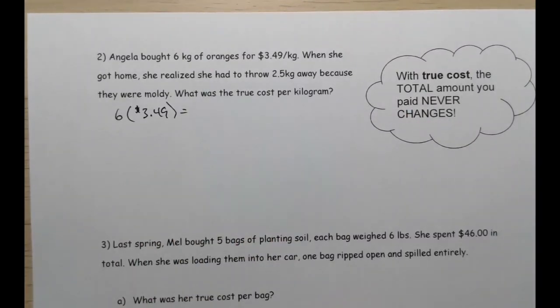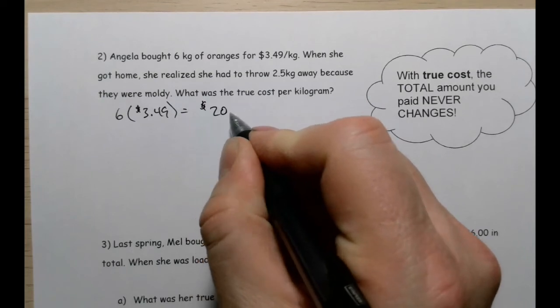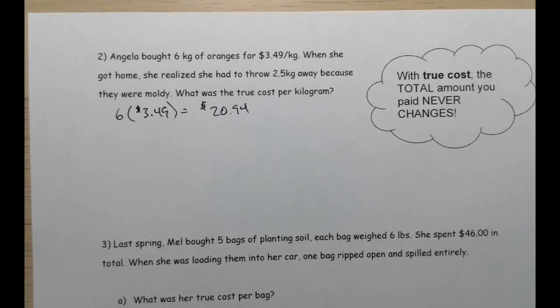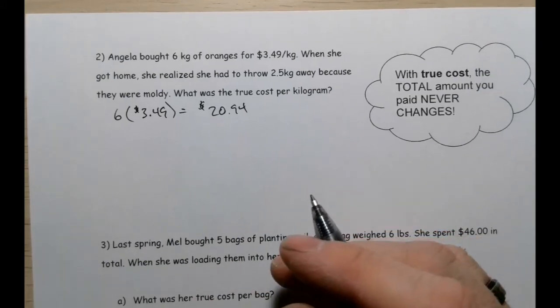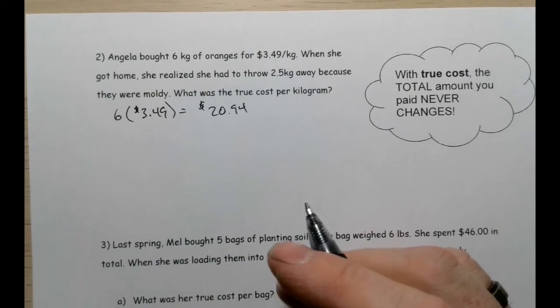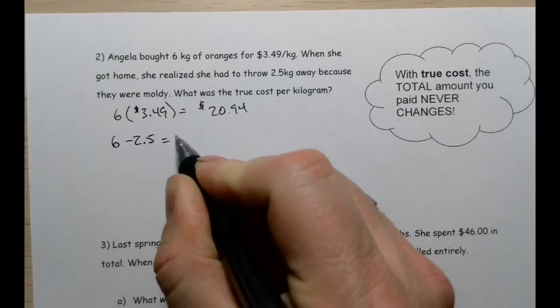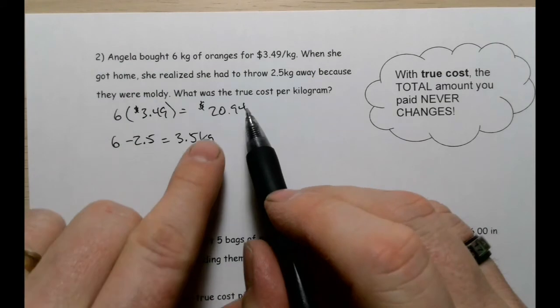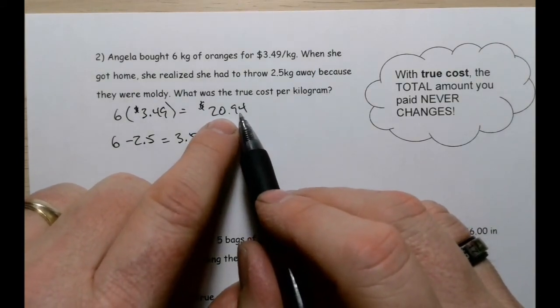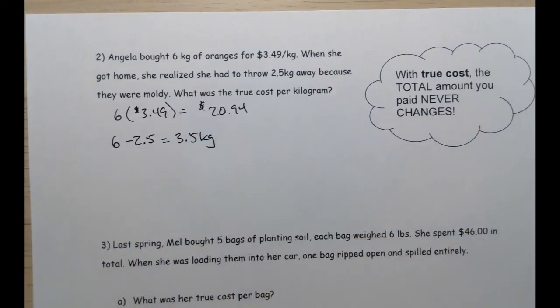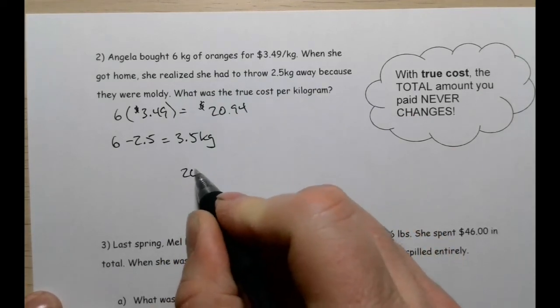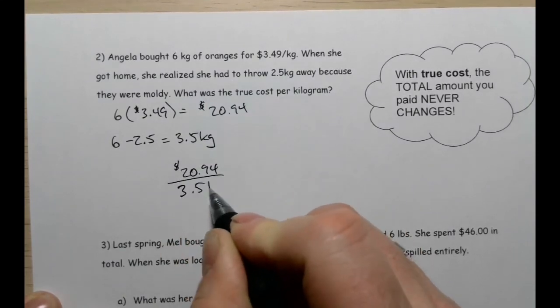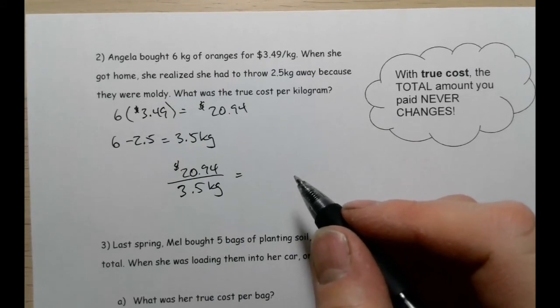But she ends up losing two and a half kilograms, which means that she actually only has three and a half kilograms. Take six and subtract two and a half kilograms, we get 3.5 kilograms. So she paid $20.94, she gave the store that money, but that money should have covered six kilograms but it didn't really. It only really covered three and a half kilograms that she's actually going to be able to eat. So really what did she pay? Well, $20.94 for 3.5 kilograms. Let's divide that out. $20.94 divided by 3.5, and we get $5.98 per one kilogram. This is the actual amount that she paid, not the price that was advertised at the store.